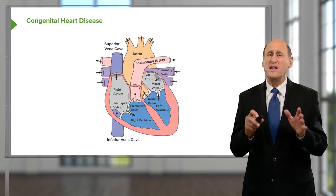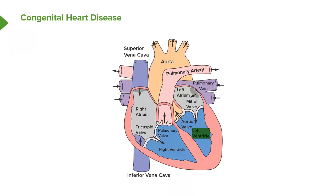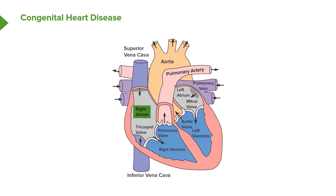Again, very briefly, let's review the anatomy. The left ventricle pumps out through the aortic valve into the aorta. Circulation passes around through the tissues of the body, comes back through the large veins to the right atrium, passes into the right ventricle, out into the pulmonary artery, back to the left atrium, back to the left ventricle. So you can imagine there are all kinds of problems that can occur in this very complex structure.